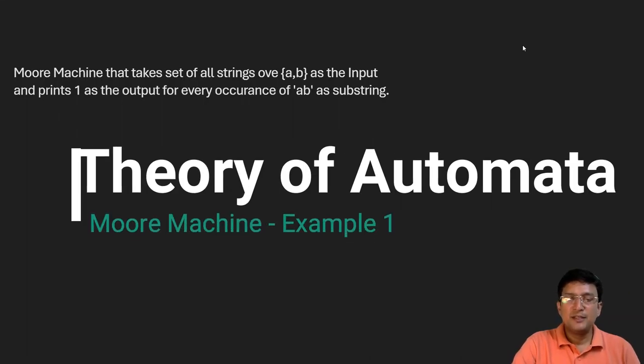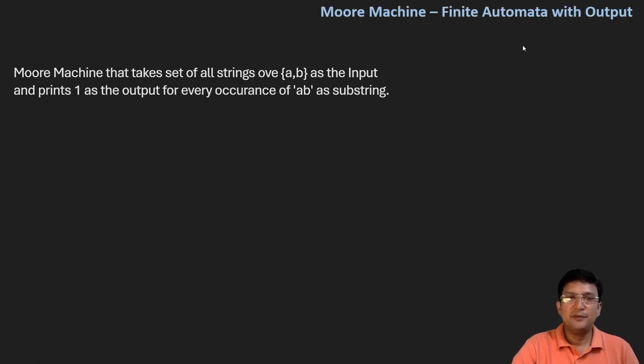We will now take some examples to understand the Moore machine and the Mealy machine in detail. From today's lecture, we will just learn about the Moore machine. And in the subsequent lectures, we will learn about the Mealy machine. What is the Moore machine? Just to remind you that the Moore machine is a kind of finite state machine wherein the outputs are associated with the states.